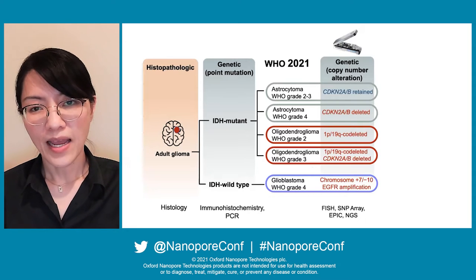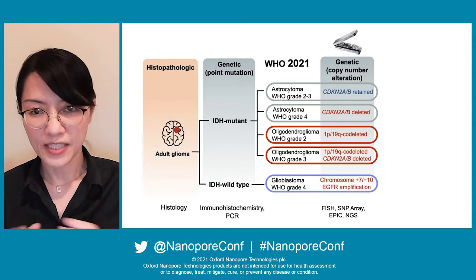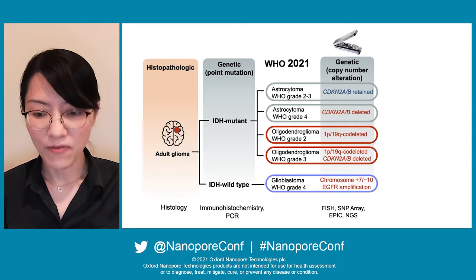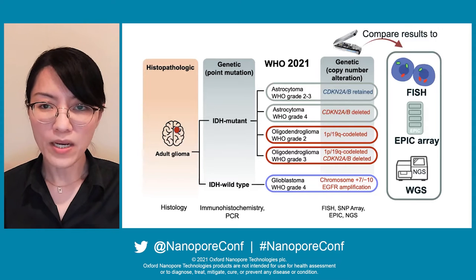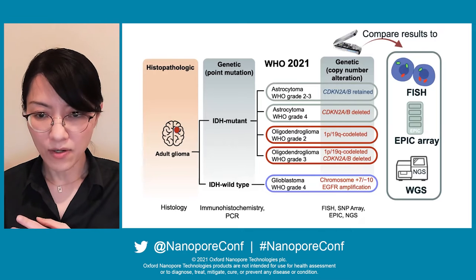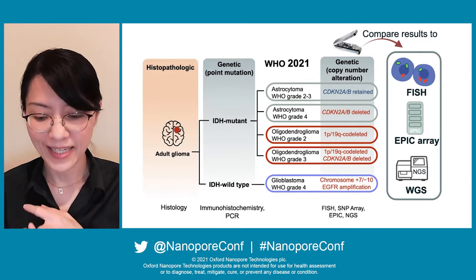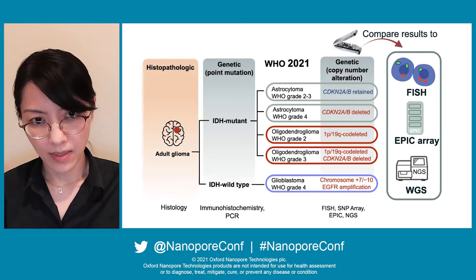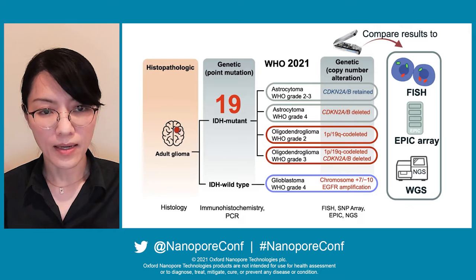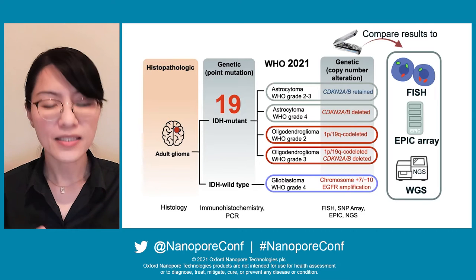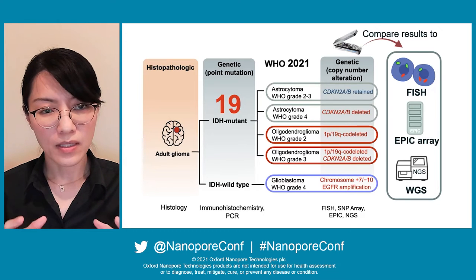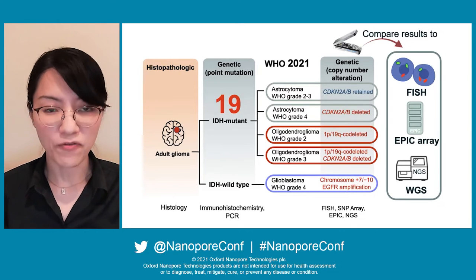To achieve the goal and reduce the time, I propose to use nanopore sequencing-based copy number variation. The result will be compared with currently used methods including FISH, EPIC array by Illumina, and Illumina whole genome sequencing. I proposed this hypothesis to Professor Sit, he agreed, and provided me with 19 samples of IDH mutant samples. DNA was extracted from fresh frozen tissue.